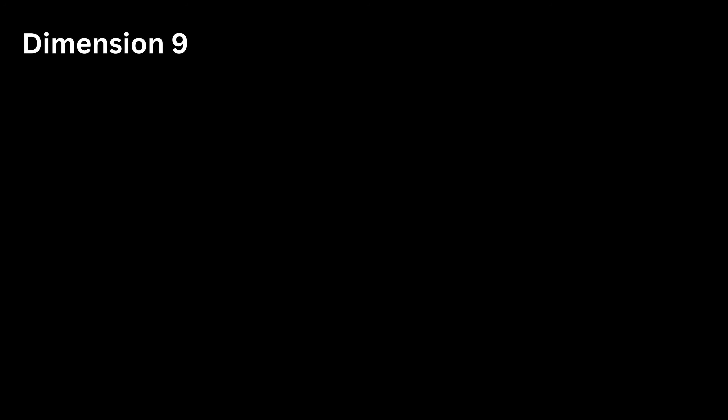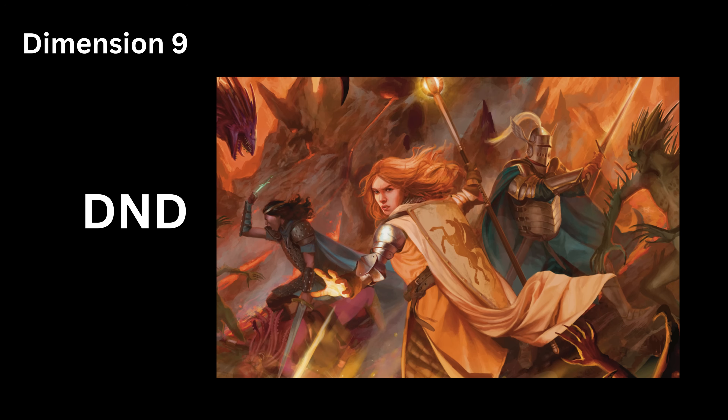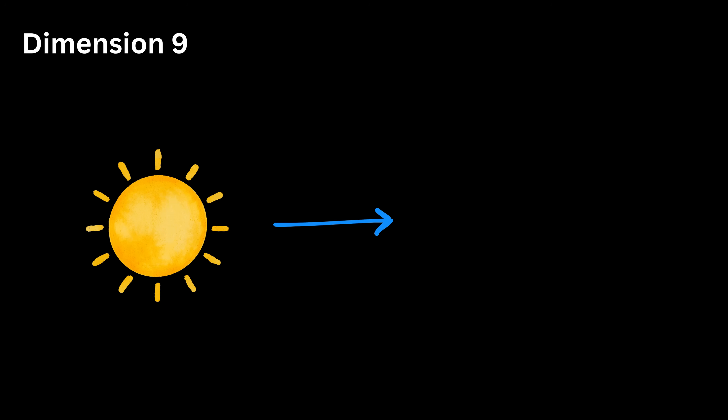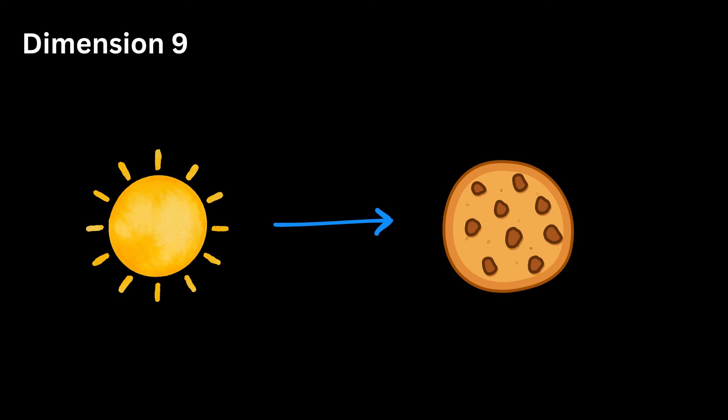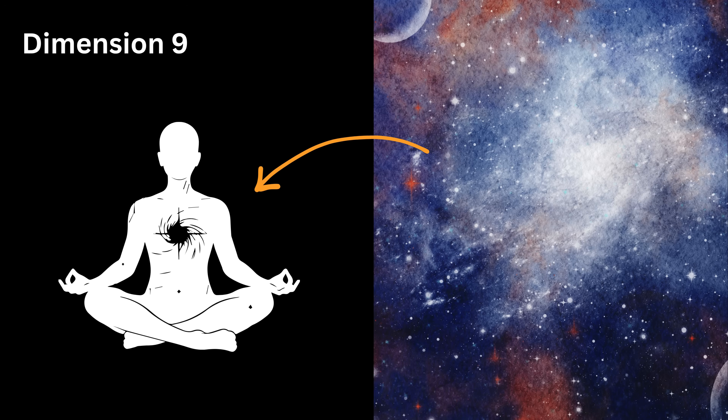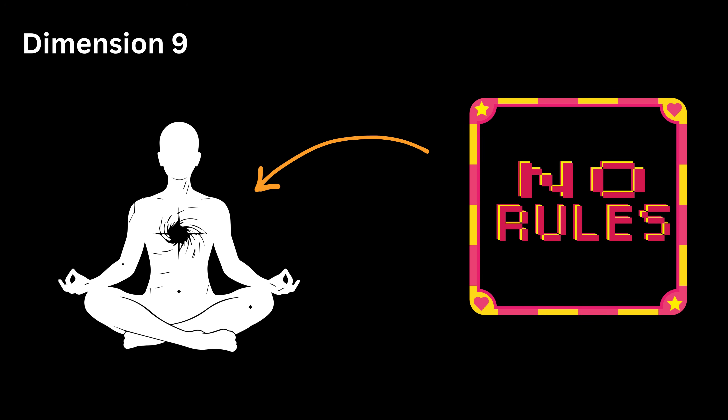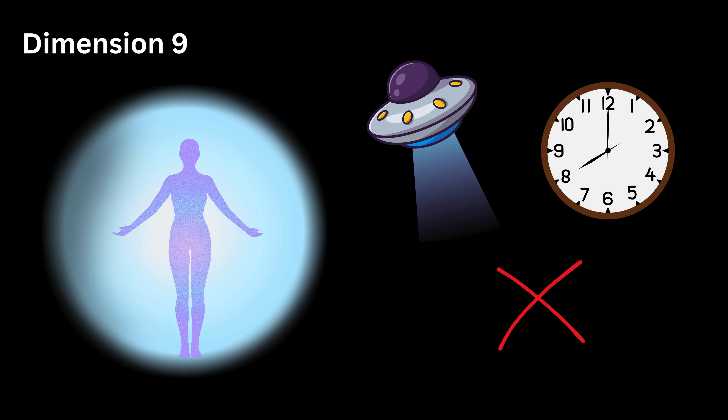Dimension Nine. Now imagine a tabletop role-playing game like DND — Dungeons and Dragons — where you do whatever you want. You can literally say, 'I turn the sun into a cookie,' and the Dungeon Master decides the reality. You are beyond the limitations of any game engine or physics. Nothing forces rules on you. It is beyond all physical constraints of space and time that we know.